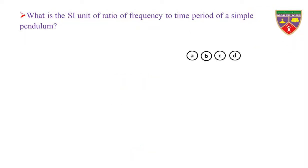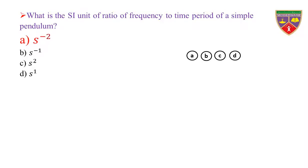What is the SI unit of ratio of frequency to time period of a simple pendulum? Option A: per second square. Option B: per second. Option C: second square. Option D: second. The key is per second square. Therefore, the correct option is A.